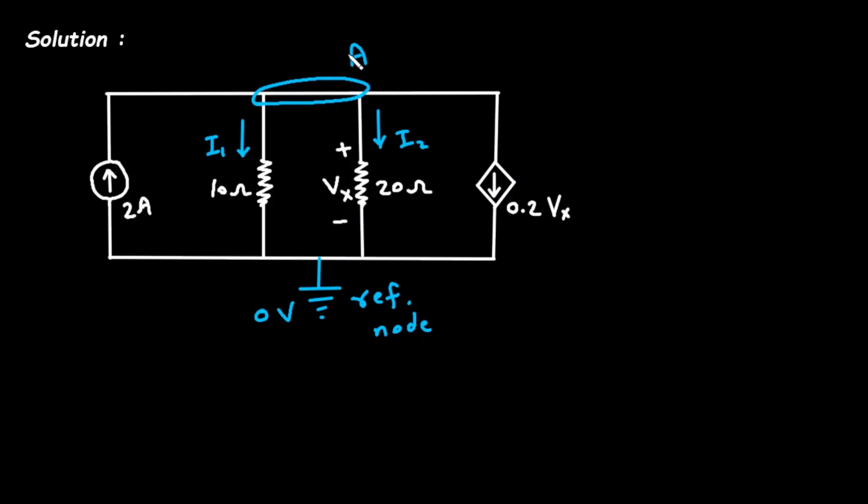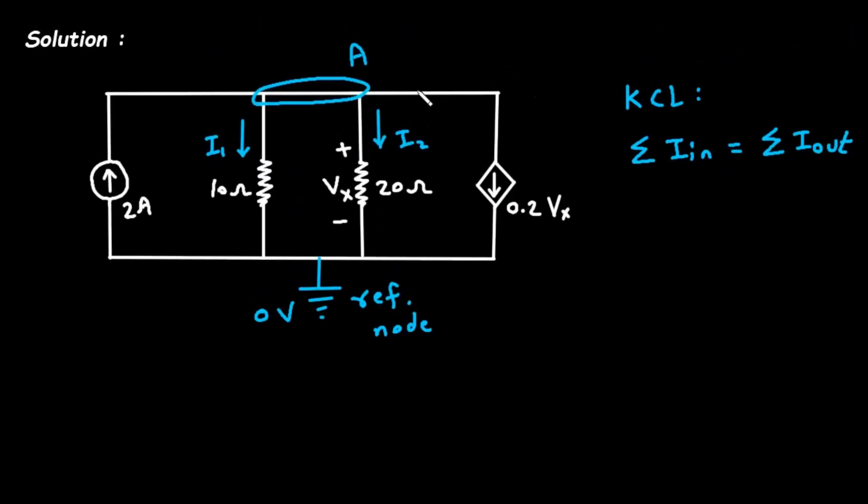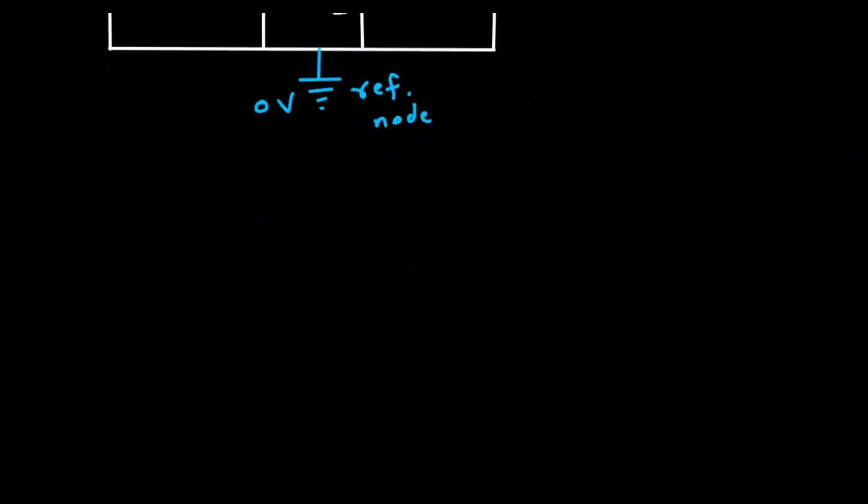Now what we will do - we will apply KCL at node A. According to KCL, KCL states that summation of all the currents entering a node is equal to summation of all the currents leaving the node. So let's apply KCL at node A.